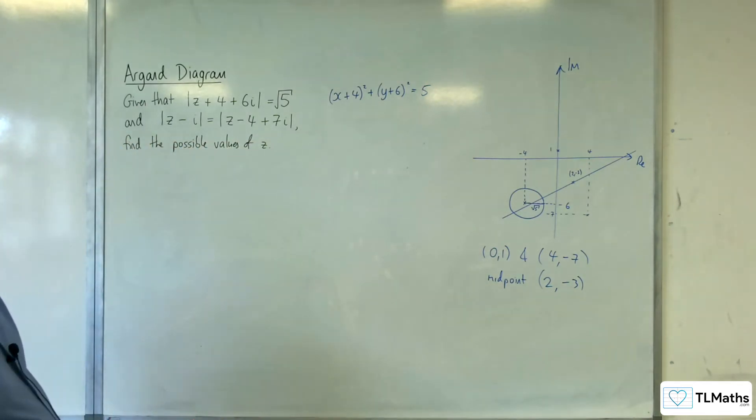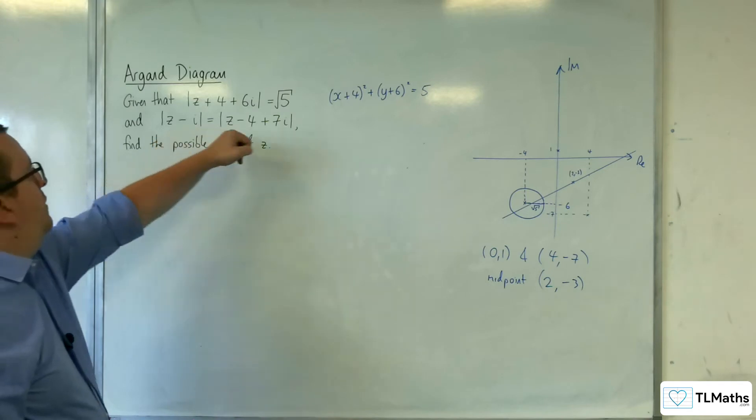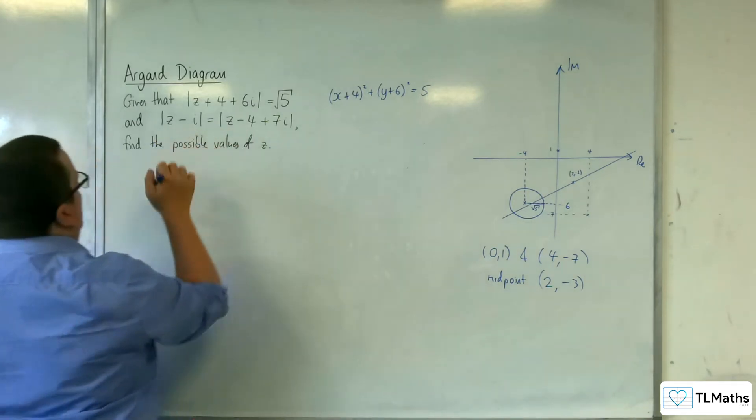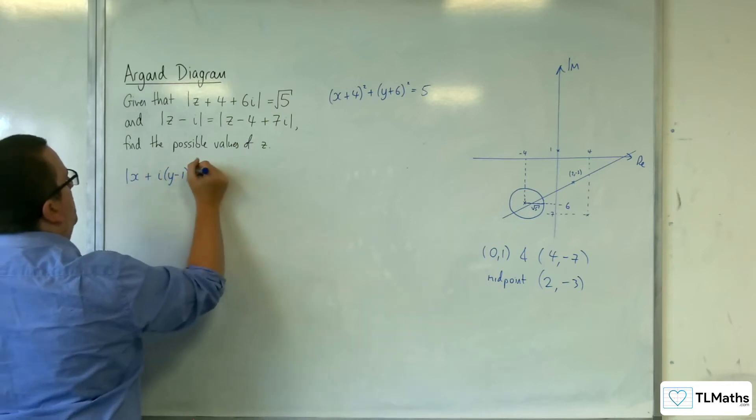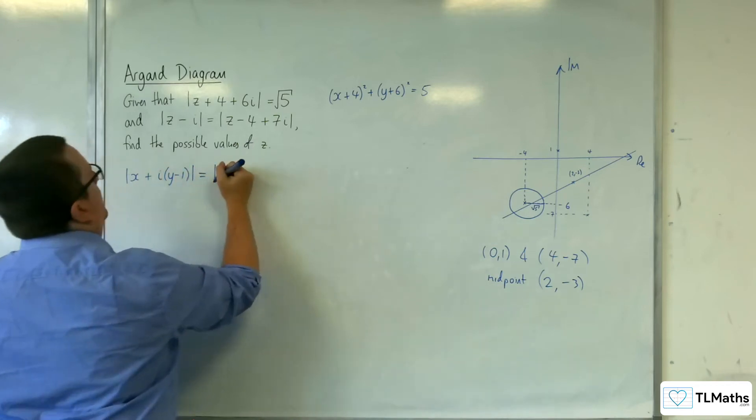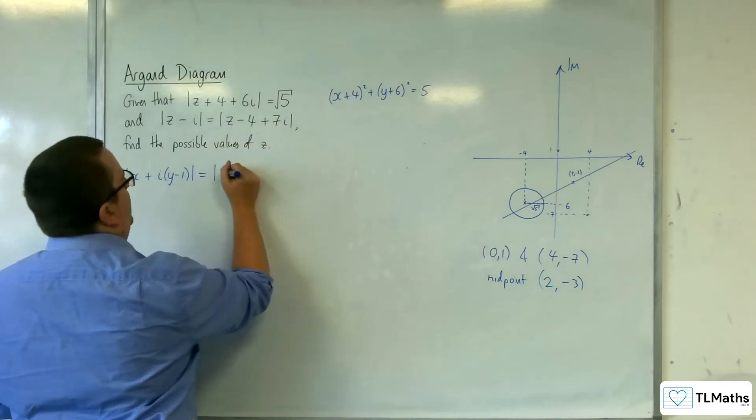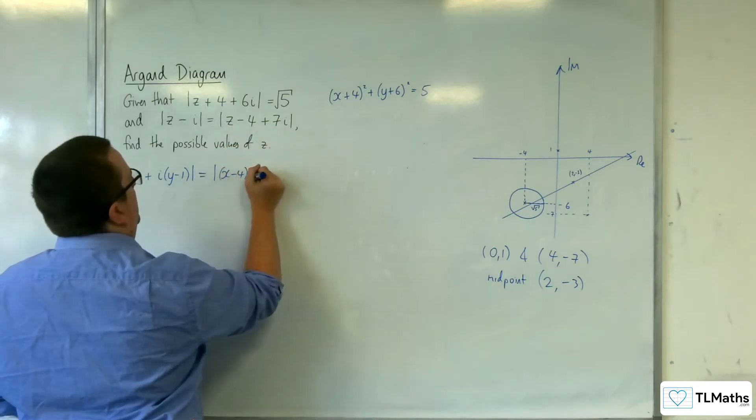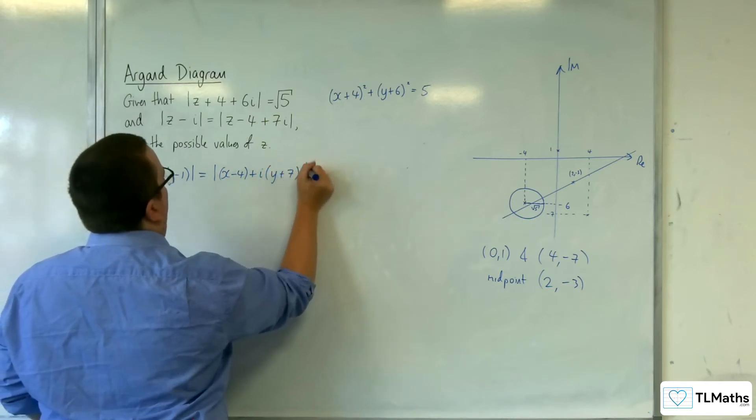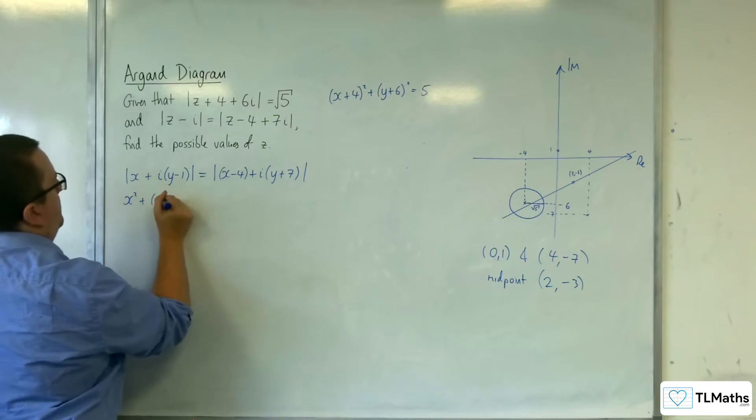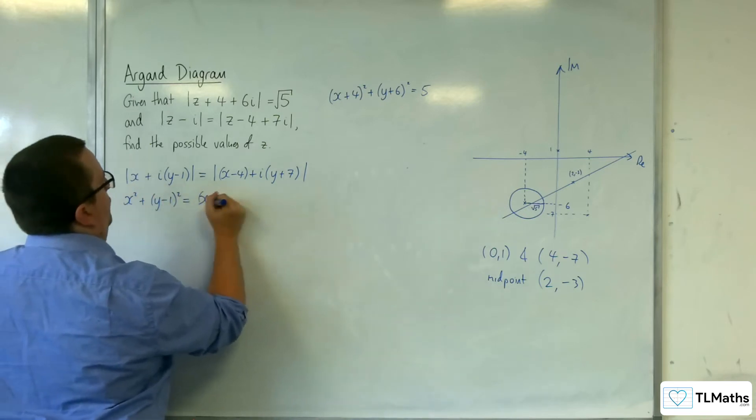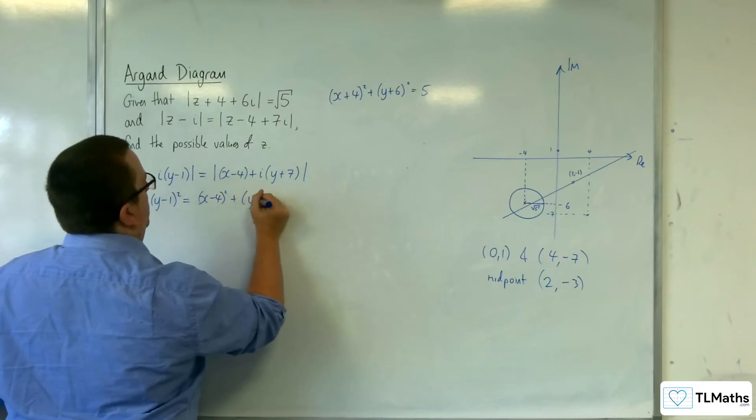Now the equation of the line. Now if we run this through, we're going to have x plus iy take away i. So we're going to have x plus i lots of y take away 1 is equal to, then I've got x plus iy take away 4 plus 7i. So x take away 4 plus i lots of y plus 7. So I'm going to have x squared plus y minus 1 squared equals x take away 4 squared plus y plus 7 squared.